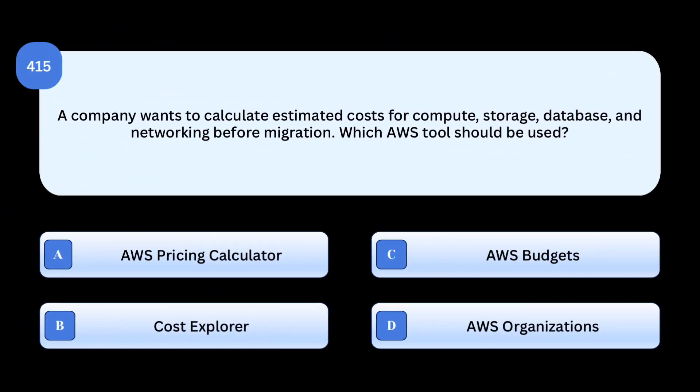A company wants to calculate estimated costs for compute, storage, database, and networking before migration. Which AWS tool should be used?